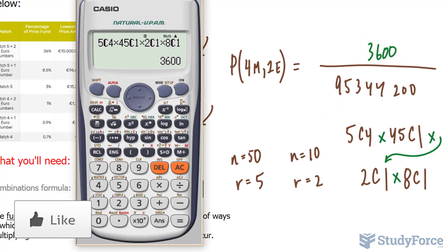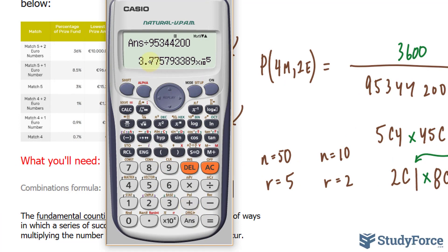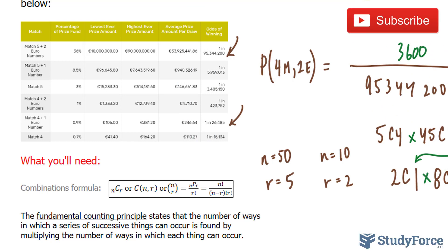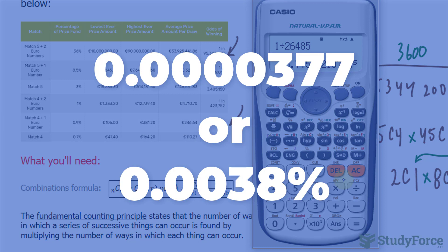Those are the possible combinations of this ever happening. And we take this 3,600, and we divide it by the total number of combinations, which is 95,344,200. And we end up with 2 in every 52,969. That's approximately equal to 3.77 times 10 to the power of negative 5. Now, on their website, they say that it's 1 in 26,485. So, let's put that into our calculator, 1 divided by 26,485. And we end up with a number that is nearly identical to what we found, 3.77 times 10 to the power of negative 5. That number is displayed on your screen.